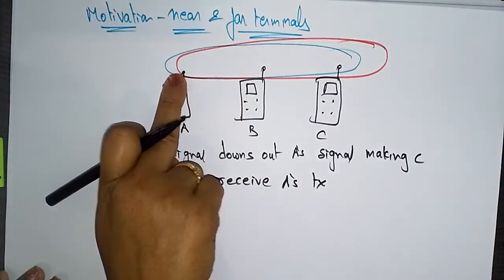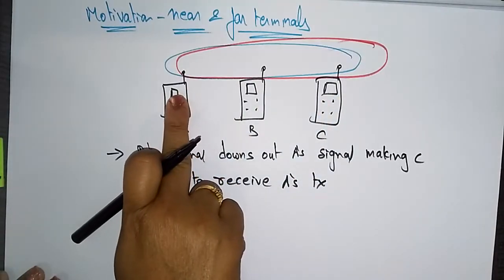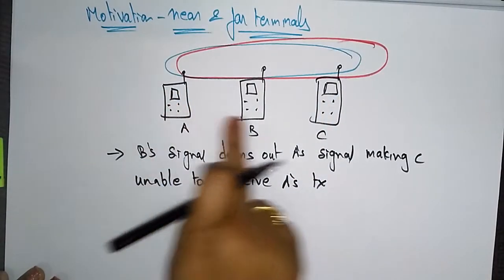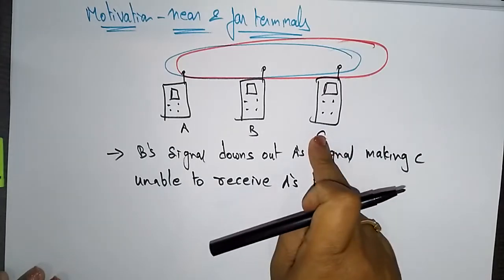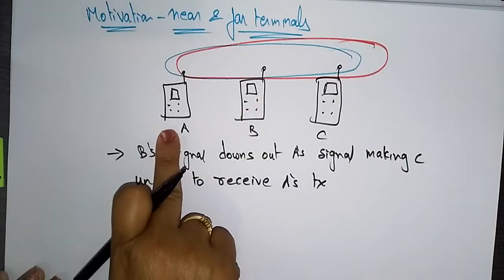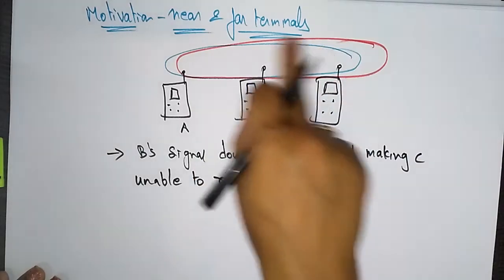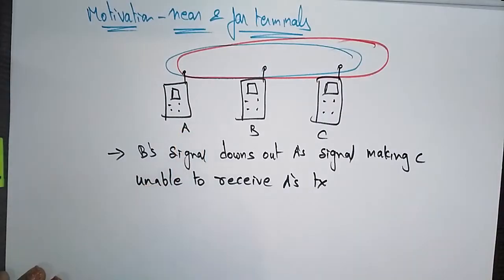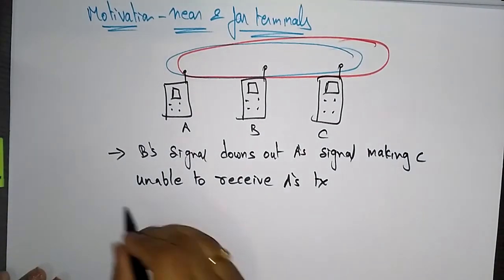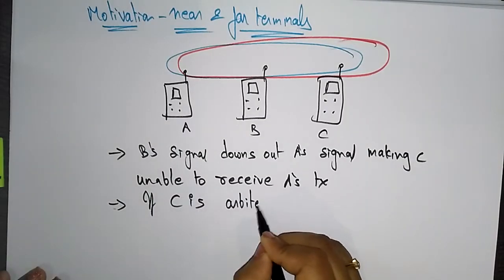Even though C is far from A, it is still within range and should be able to receive A's signal. However, C is not receiving A's signal because B is making A's signal power too low. B is dominating, taking maximum power, and making C unable to receive A's transmission.